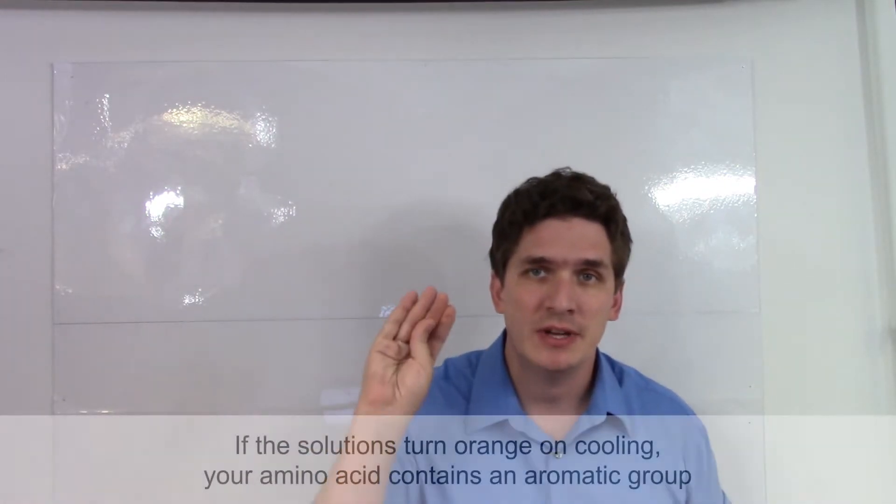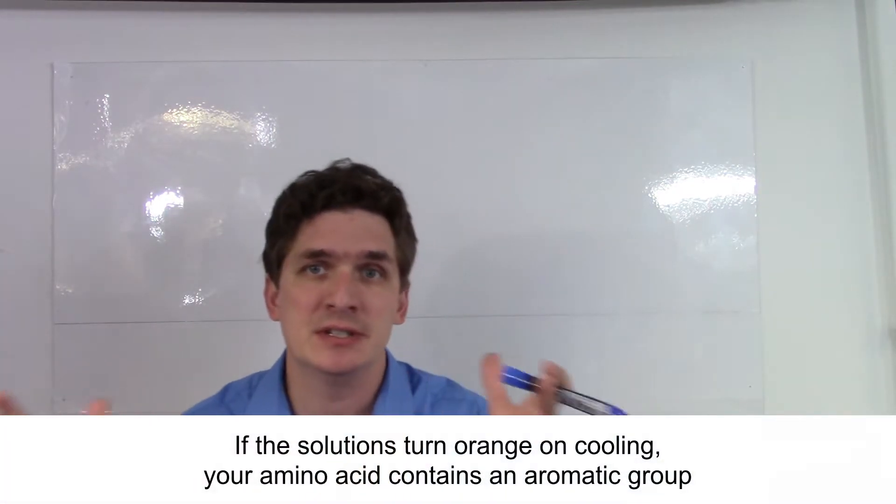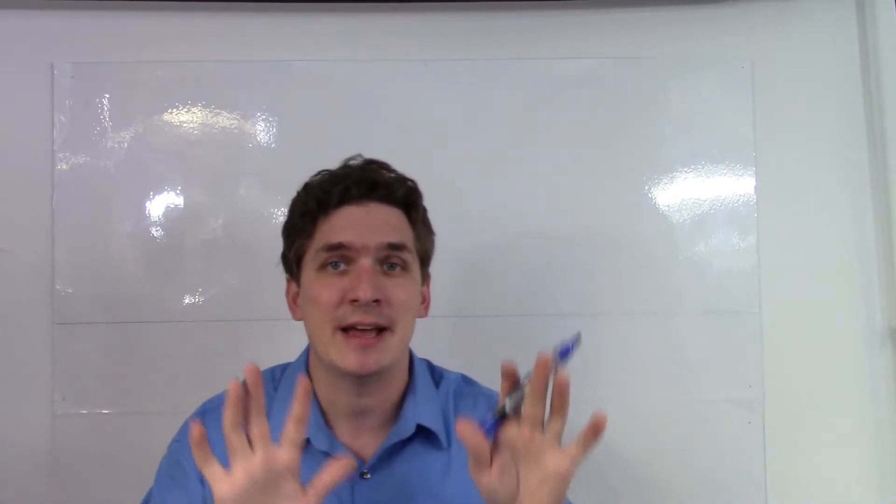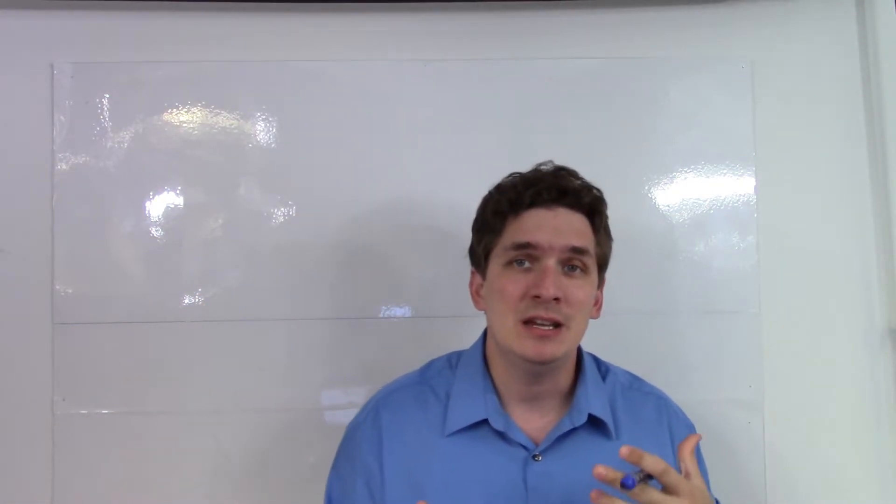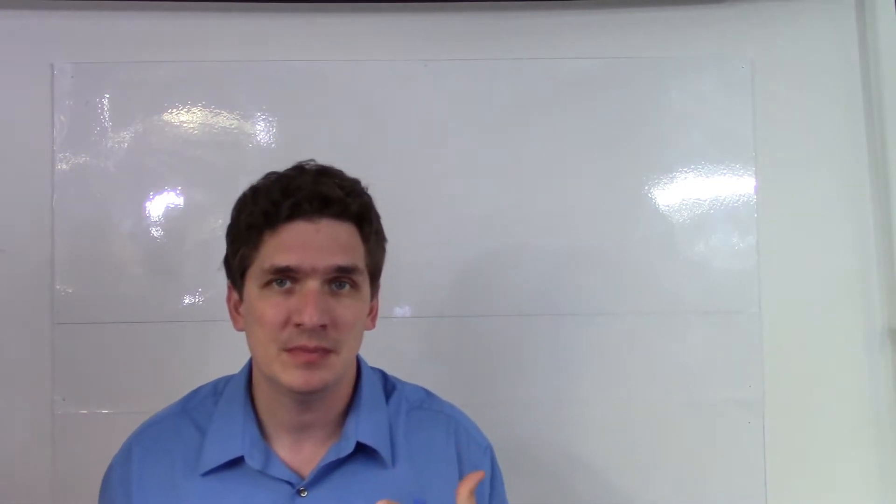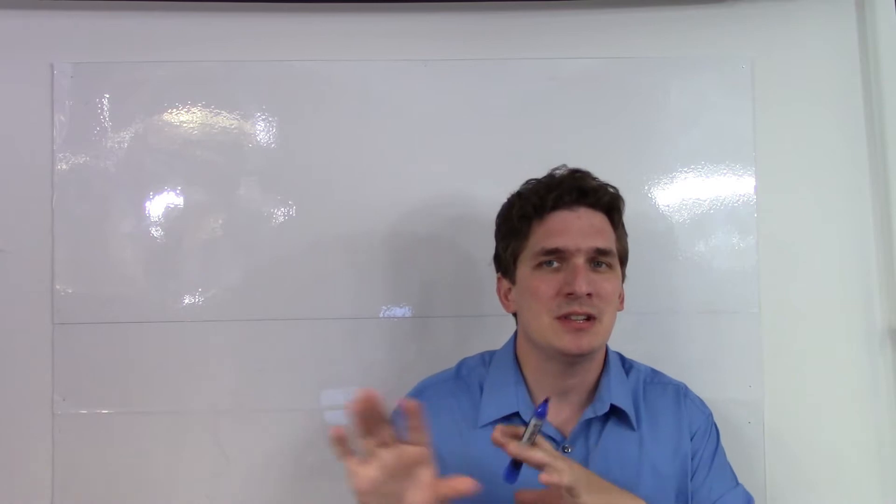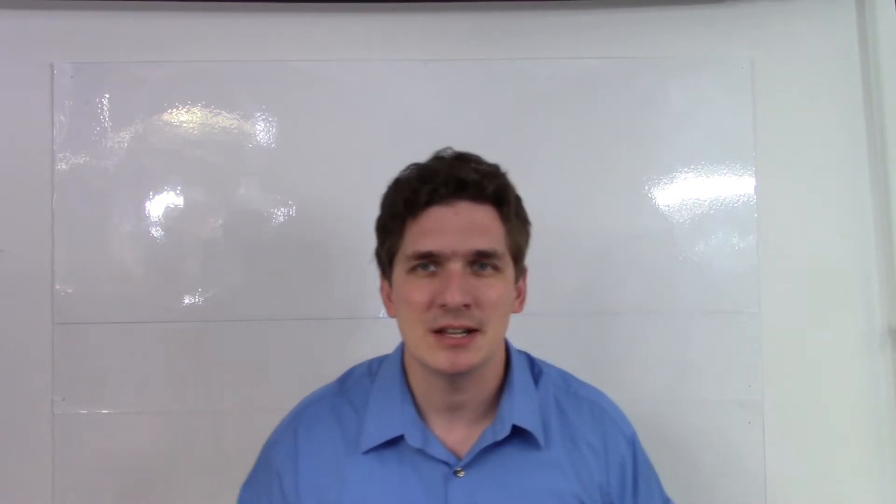You can kind of see this when you get nitric acid on nitrile gloves. The nitrile gloves don't contain aromatic groups, and so your nitrile gloves will actually turn yellow when you get the nitric acid on them. Your nitrile gloves contain the nitrile group. There's a lot of chemistry that goes on there, but that's kind of where you get that yellow color from.